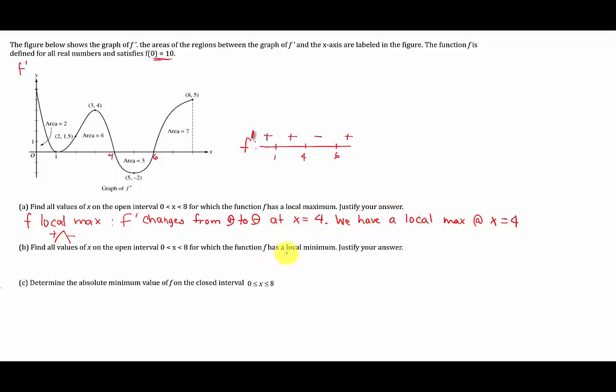Similarly, here they ask us to find all values where we have a local min. So f has a local min, that would be negative to positive. So f prime changes from negative to positive, and where does that happen? That happens right here at x equals 6. We have a local min at x equals 6.